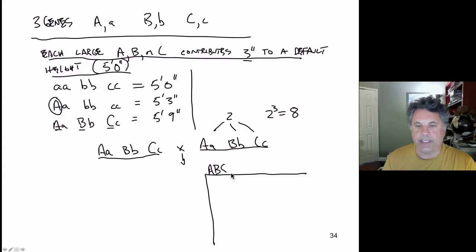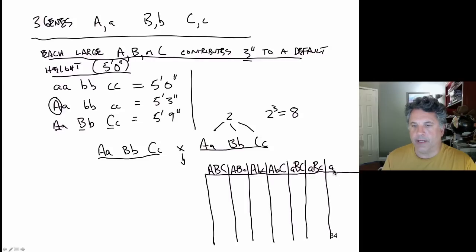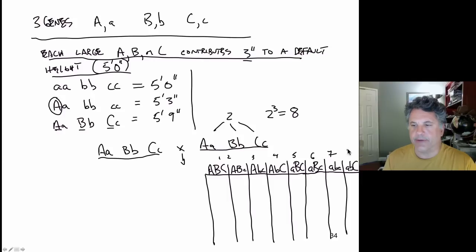For illustration: big A, big B, big C could be one type; big A, big B, little c another; big A, little b, little c another; big A, little b, big C another. And likewise for little a: little a with big B and big C; little a with big B and little c; little a with little b and little c; and little a with little b and big C. So there are eight possible gamete genotypes.